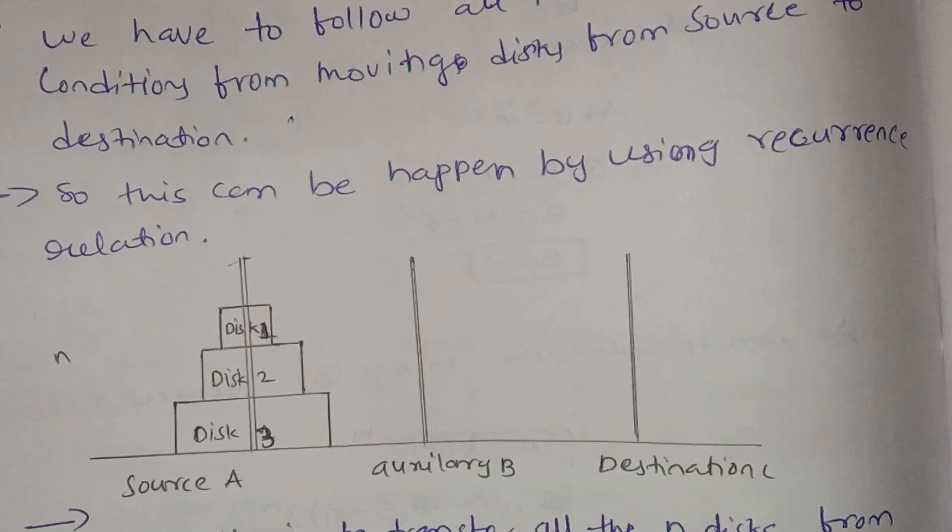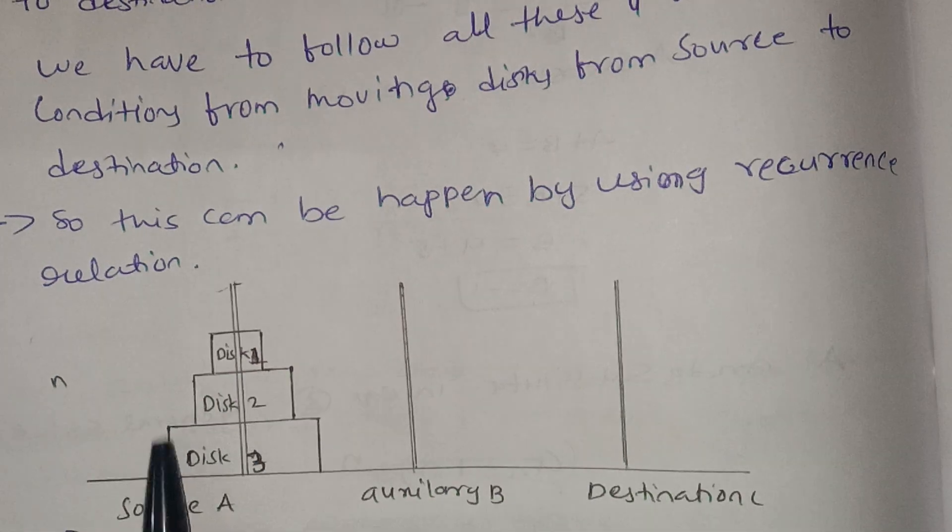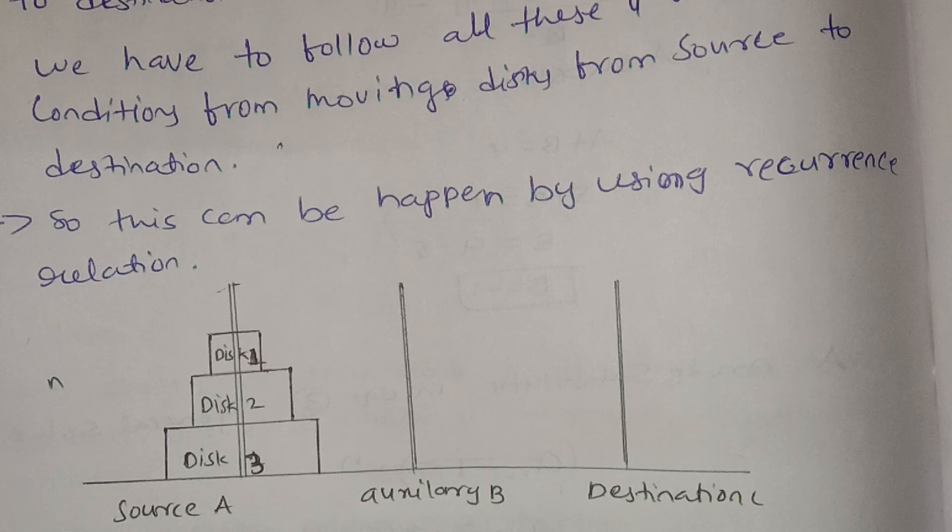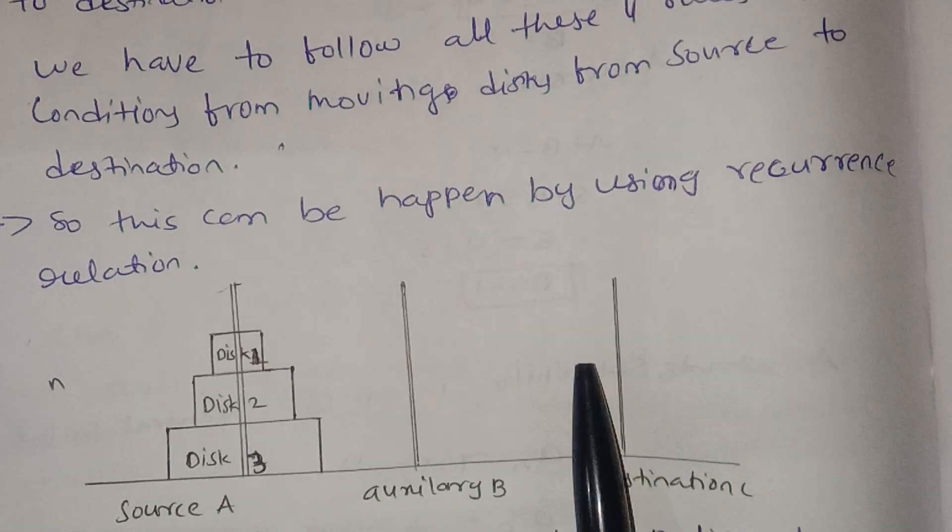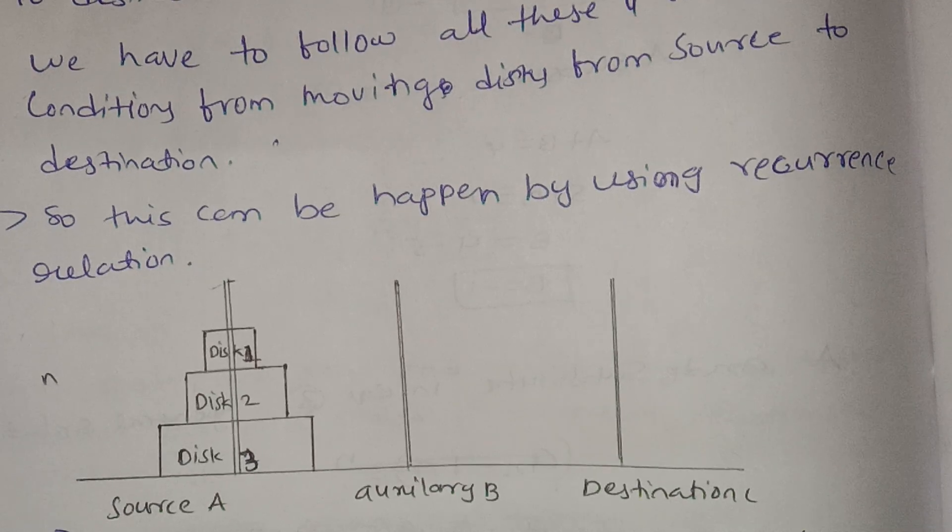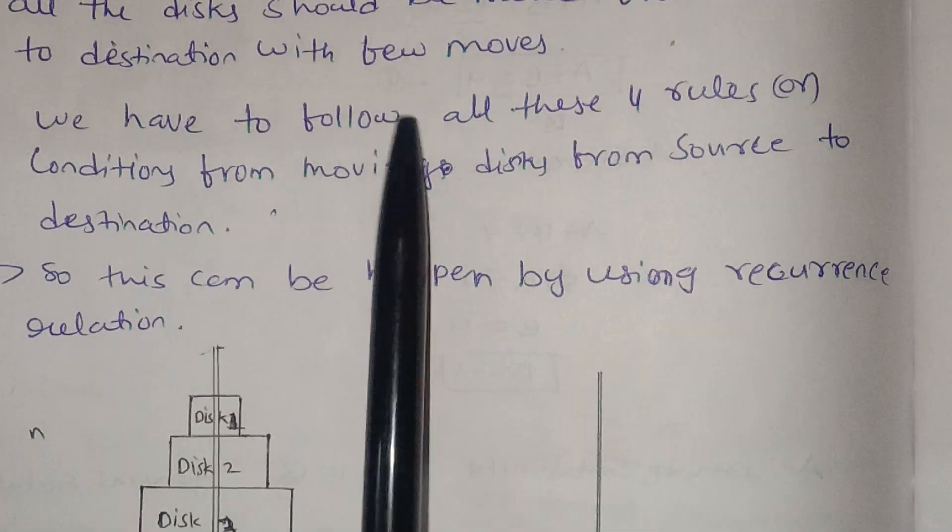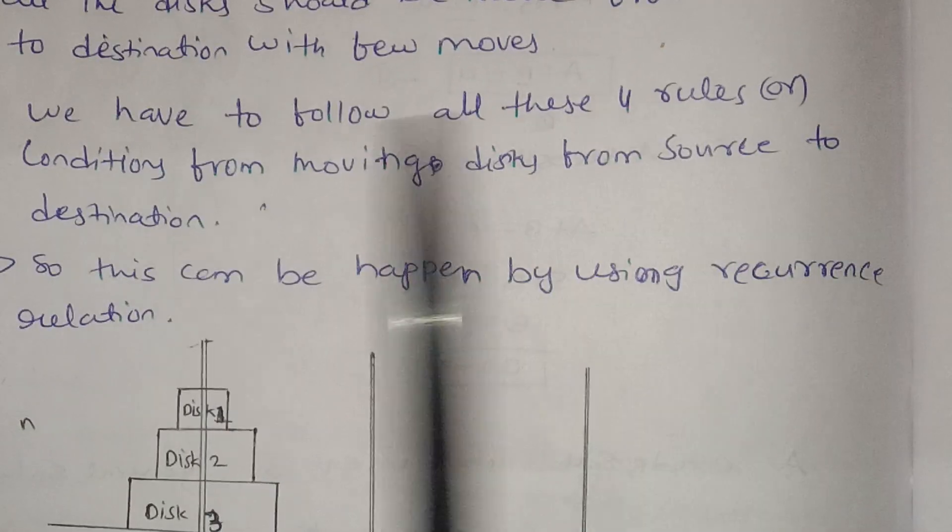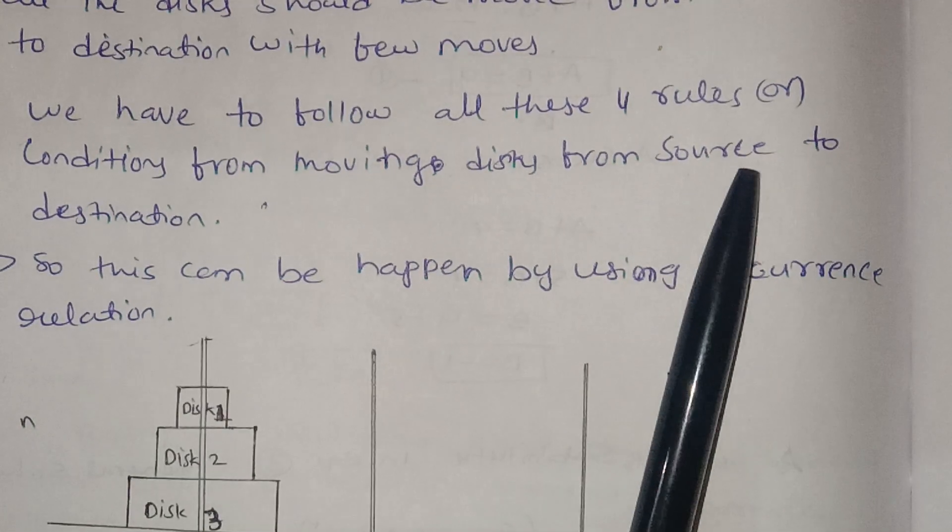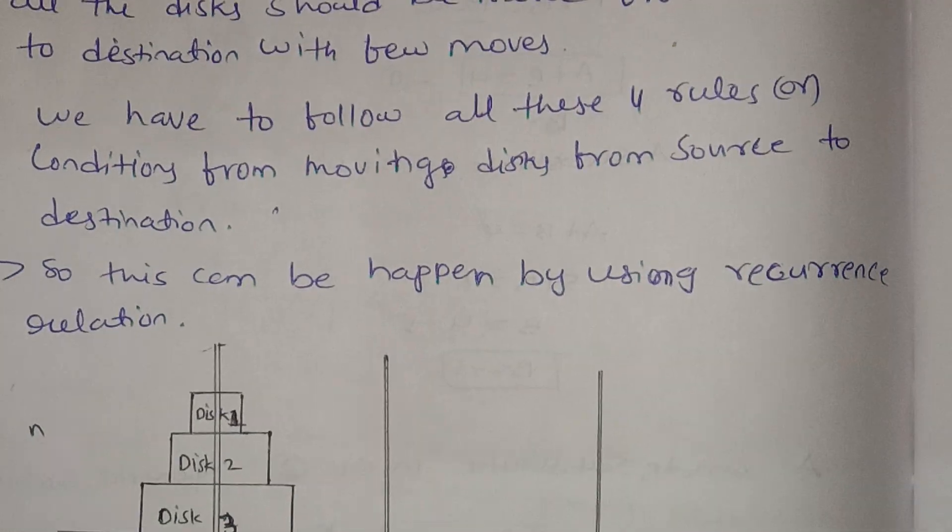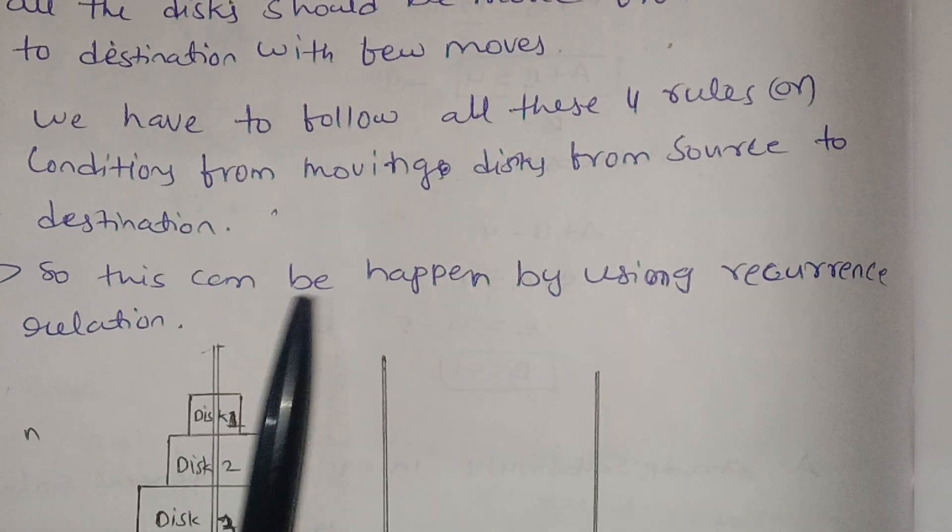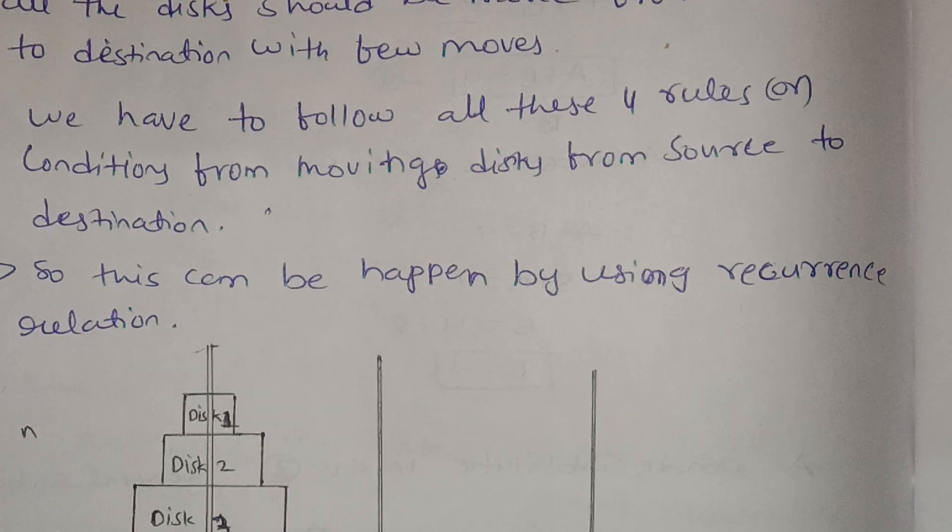All the discs should be moved from source to destination with few moves. We have to follow all these four rules or conditions from moving discs from source to destination. This can be achieved by recurrence relation.